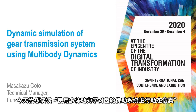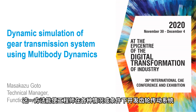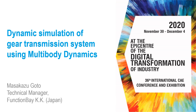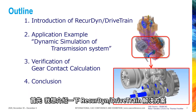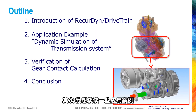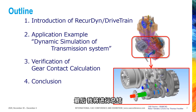Today I would like to talk about dynamic simulation of gear transmission system using multibody dynamics. I will introduce a new approach of dynamic simulation for gear transmission system using multibody dynamics, which enables engineers to develop gear transmission system considering various conditions. I have divided my presentation into four sections: an introduction of Ricardine drivetrain solution, an example of this application, a verification of this gear contact calculation approach, and finally a summary.